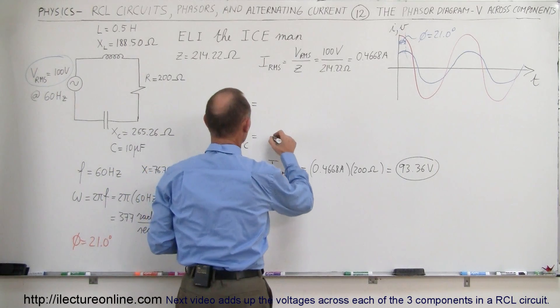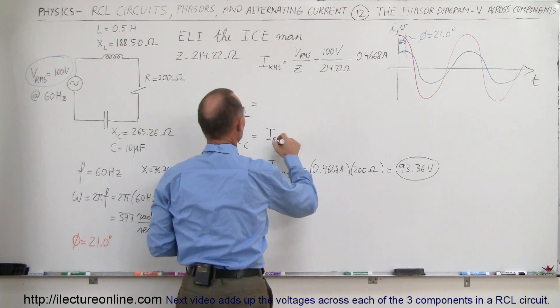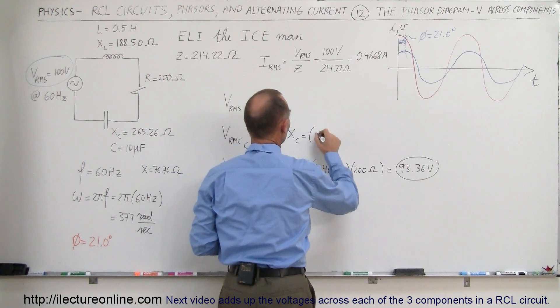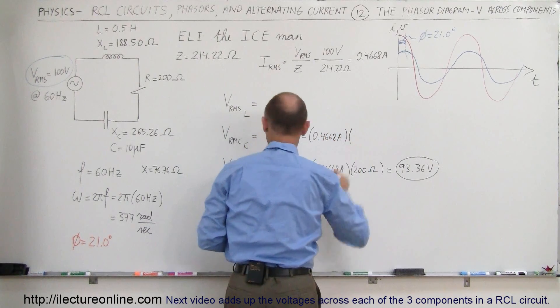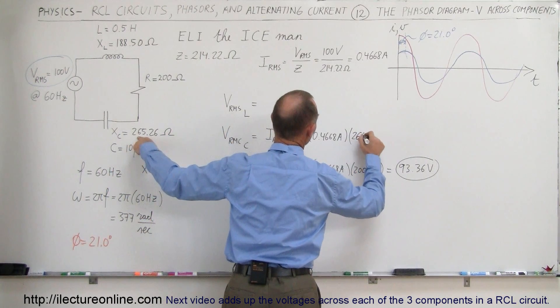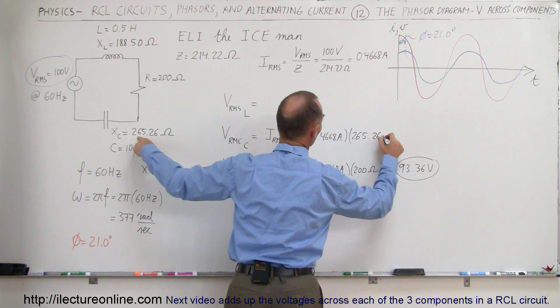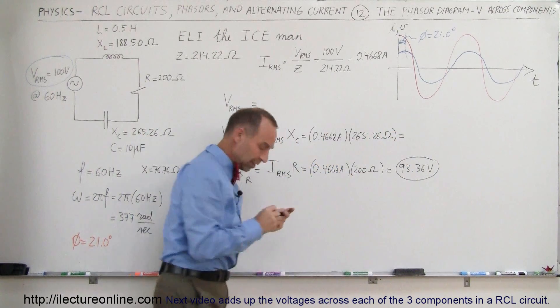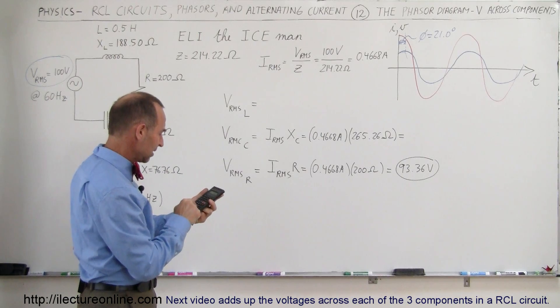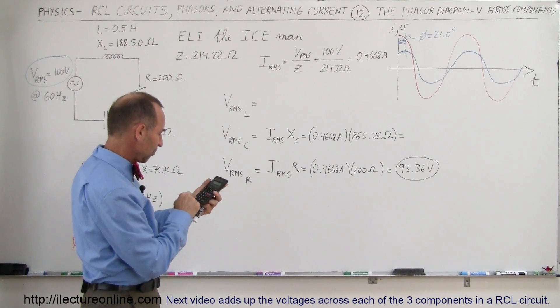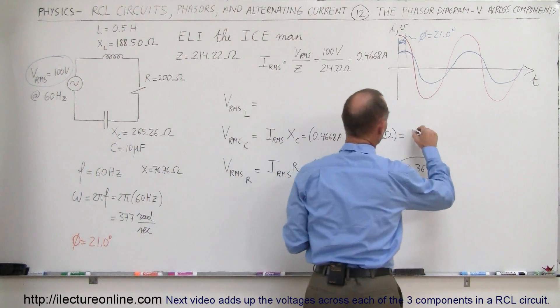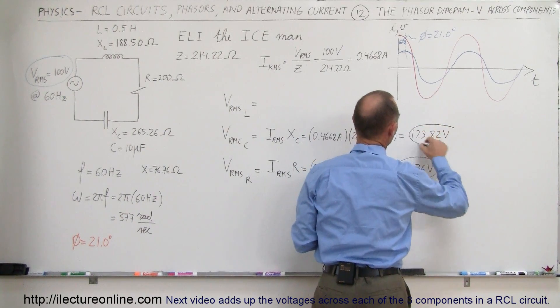Let's do the same for the capacitor. So it would be I_RMS, and instead of using the resistance, we're going to use the capacitor reactance. So that's equal to 0.4668 amps times the capacitor reactance of 265.26 ohms. That gives us the RMS voltage drop. So 0.4668 times 265.26, and we get 123.82 volts.